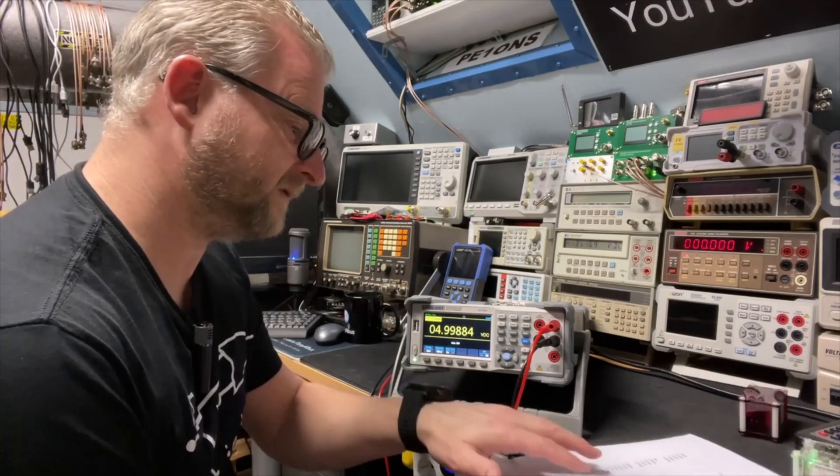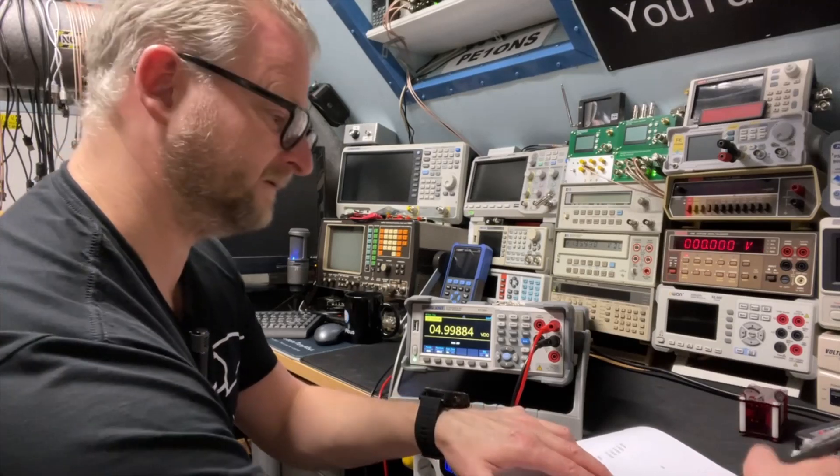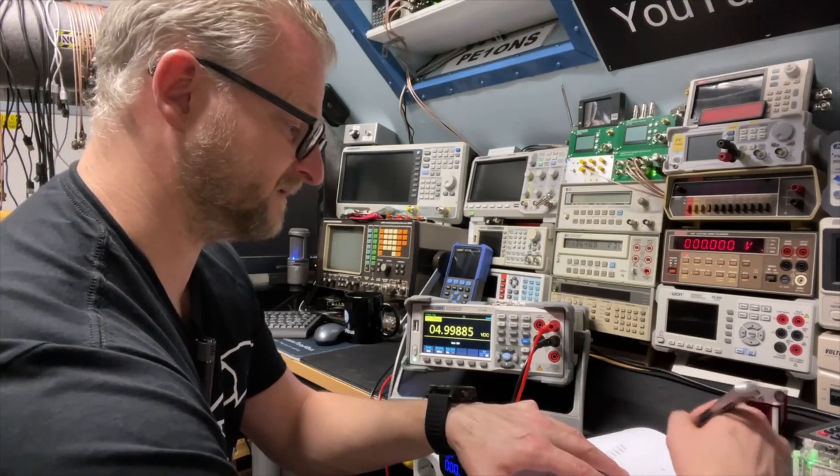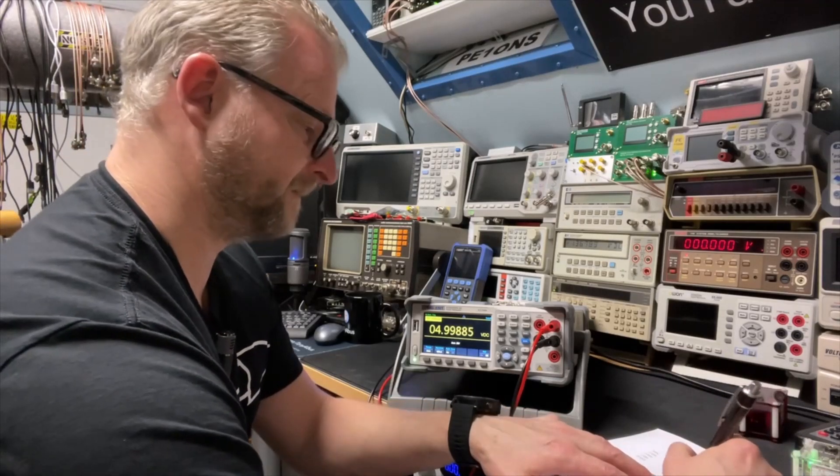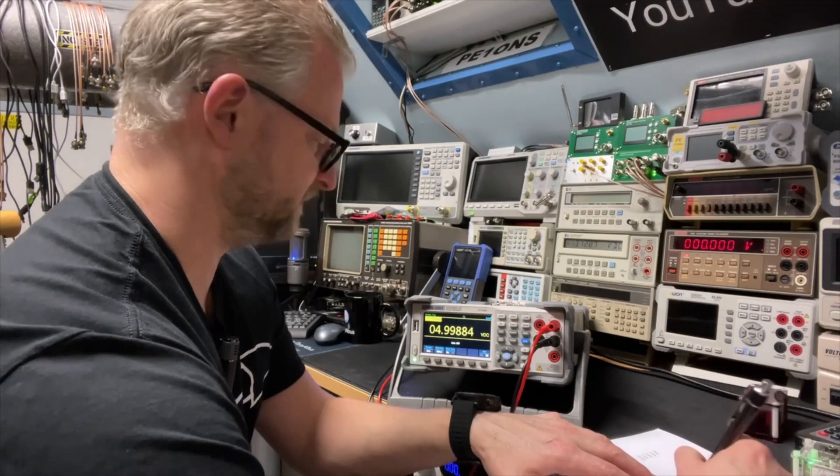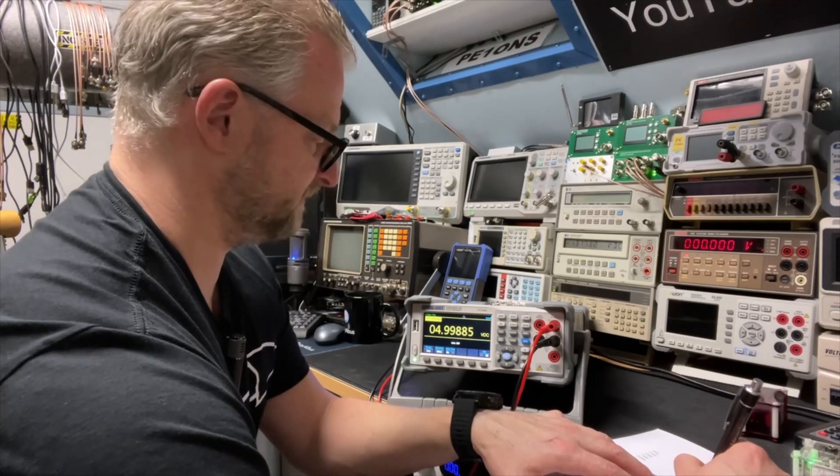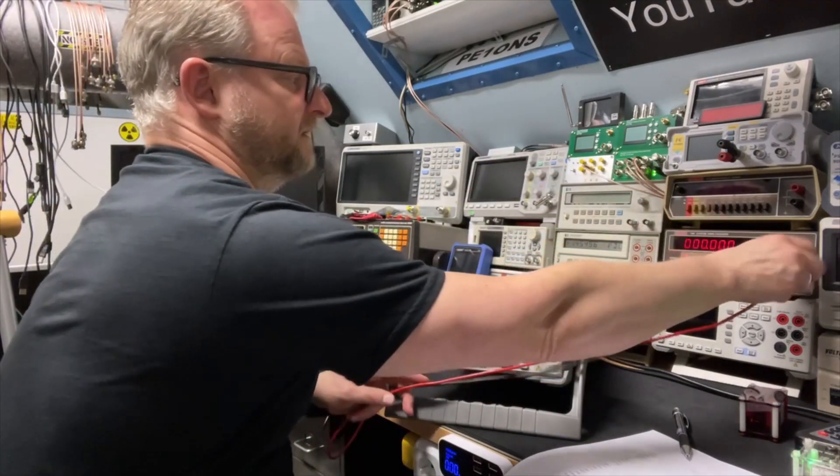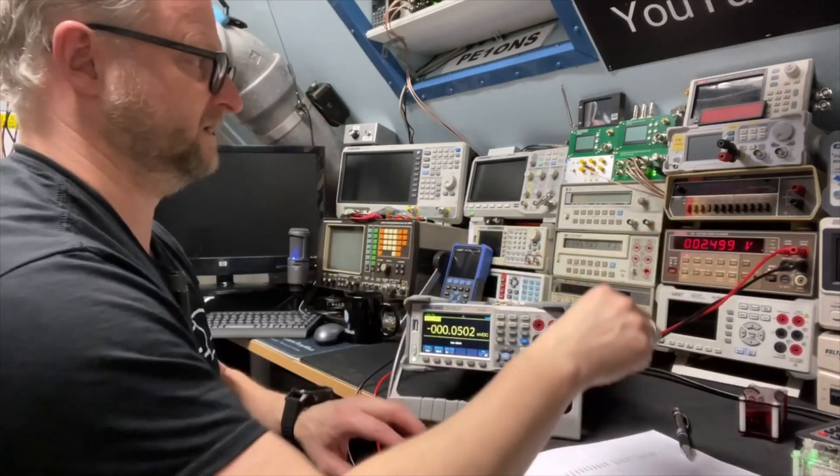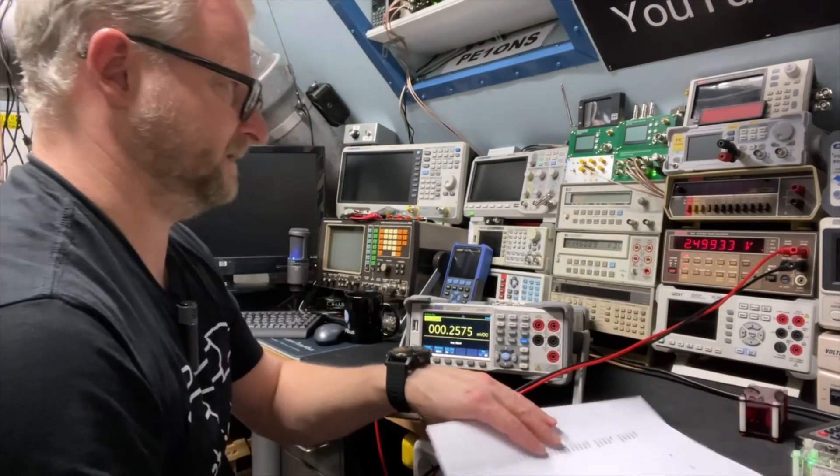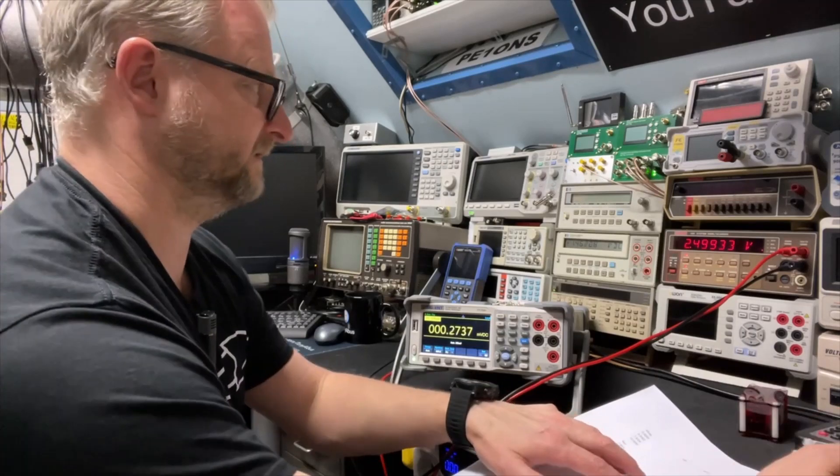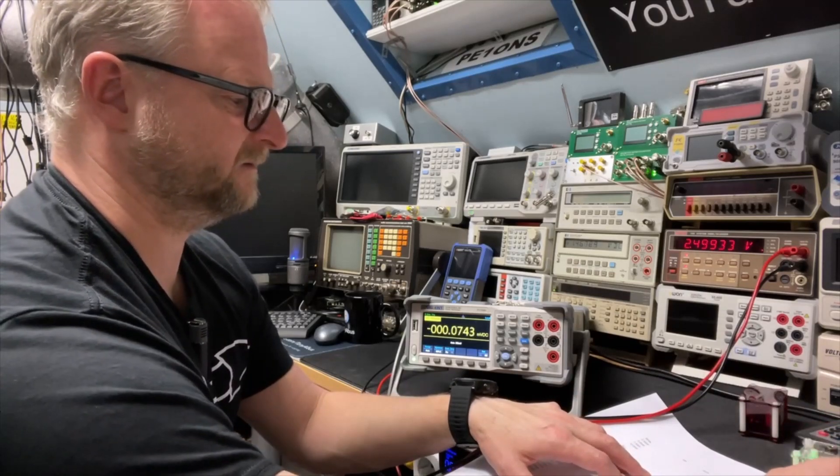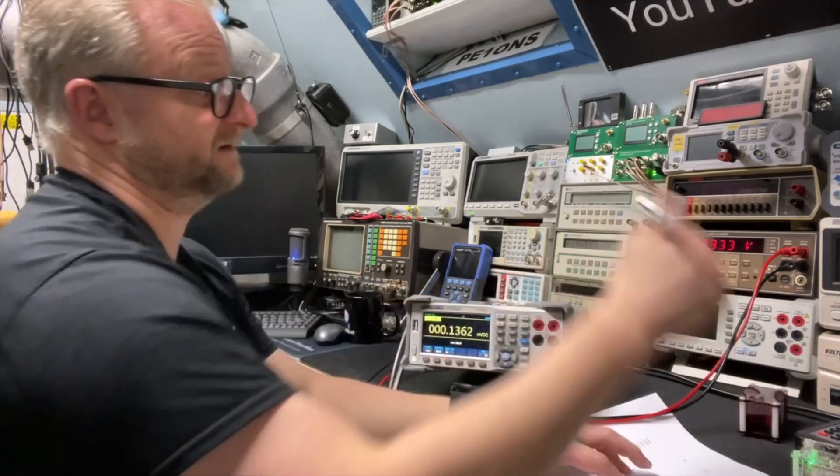And now this should be 5 volts but it says here it should be 4.99897, also not too much off. Let's do the same on the Keithley. The Keithley as I said before has not been calibrated for a while. And what does he think? Well he is even closer to what the guy says. It says 2.49938 and this one says 33.